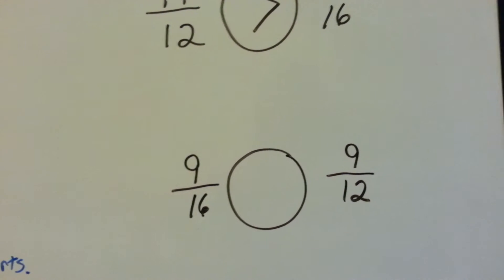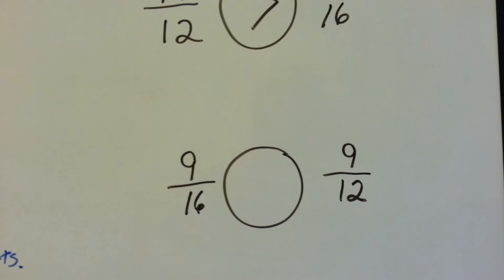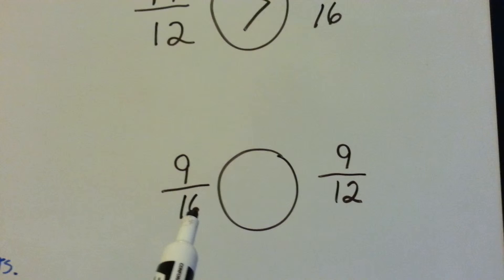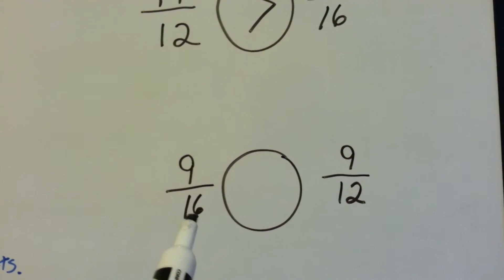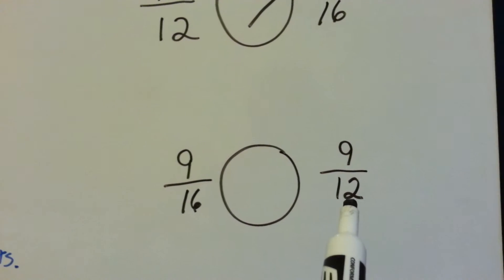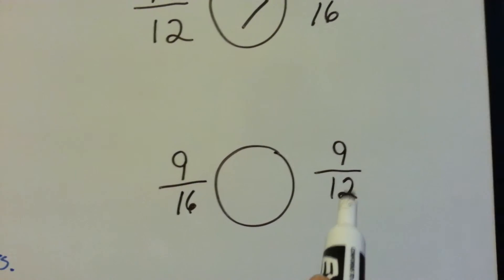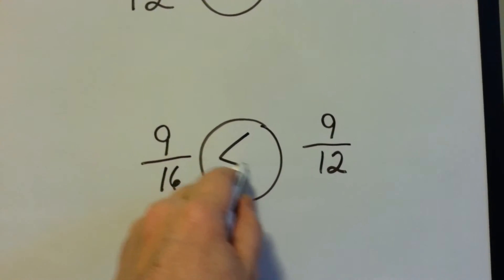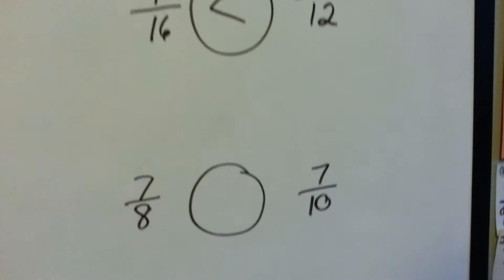We have 9 sixteenths or 9 twelfths. Which one is bigger? If something is cut into 16 pieces, they're a lot tinier pieces than if we had cut it into 12 pieces. So the smaller the denominator, the bigger the number.